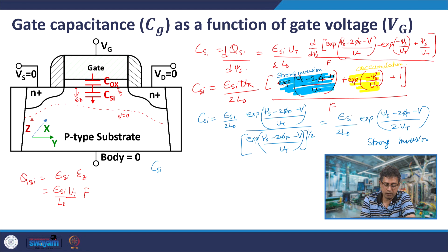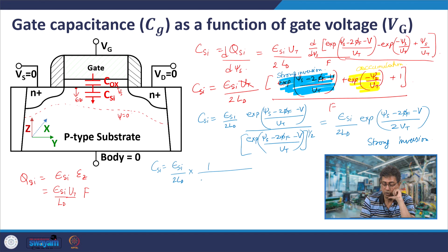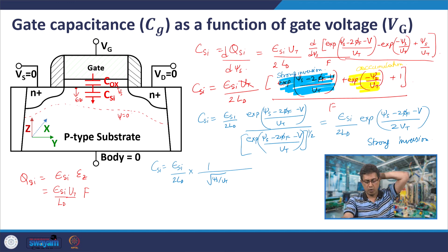In depletion or weak inversion, where depletion charge dominates, the first term is negligible, the accumulation term is also negligible since chi_s is positive, and it is only one term we need to consider. In weak inversion, the dominating term in f is the third term, so the silicon capacitance C_si goes as chi_s divided by u_t. C_si is non-linear with respect to surface potential in both regions of operation. In moderate inversion, the depletion charge is orders of magnitude larger than the inversion charge, so it is the change in depletion charge that dominates the capacitance.